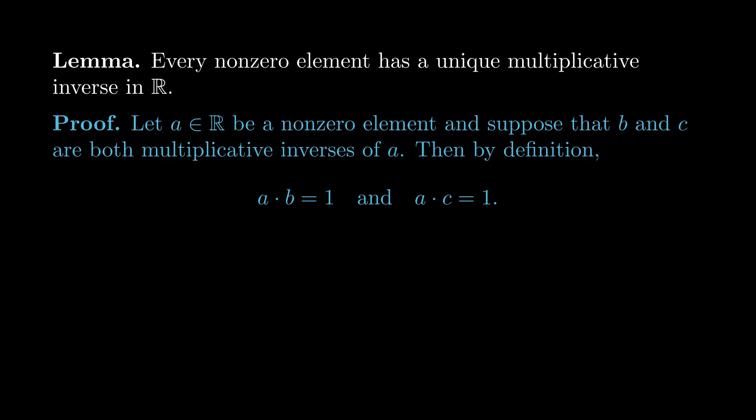By associativity and commutativity, order and grouping of factors doesn't matter. So if we consider a product of all three, a × b × c, this should be able to cancel out in two different ways. On one hand, the a and b can cancel leaving c, and on the other hand, a and c can cancel leaving b. Let's write this out as a string of equalities connecting b to c. Observe that b = b × 1 = b × (ac) = (ba) × c = 1 × c = c. Since we started by assuming we had two inverses, and we've now shown that they're equal, we're done. Every non-zero element has a unique multiplicative inverse.